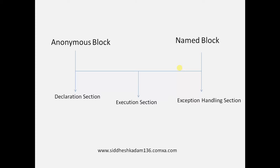Both anonymous blocks and named blocks are divided into three sections: the declaration section, the execution section, and the exception handling section. These are not separate types but rather parts of a complete PL/SQL program.